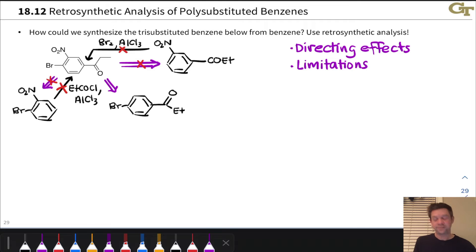That leaves us with nitration as kind of the default last step of the synthesis here, or the first disconnection. And this would work as advertised. This position where we want to install the nitro group is ortho to bromine, which is an ortho-para director, and meta to the carbonyl group, which is a meta-director. Fantastic.